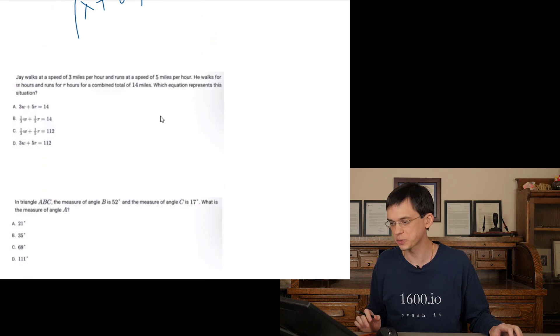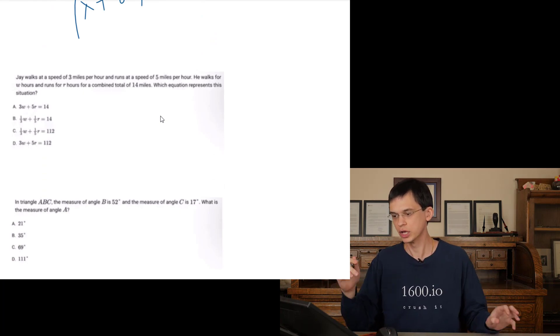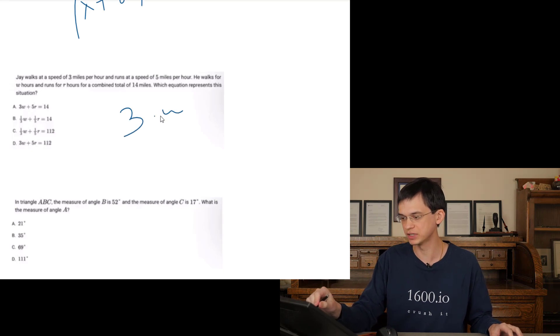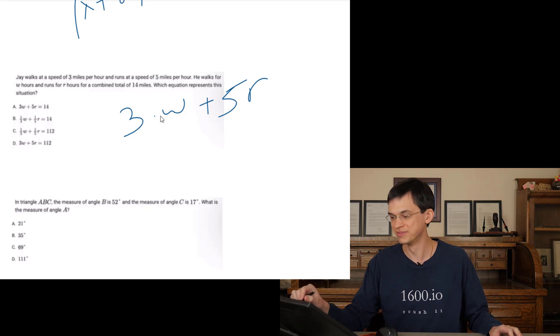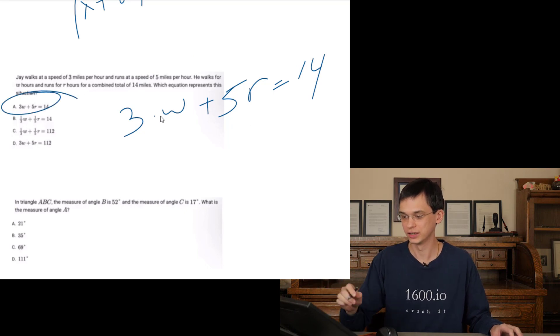Jay walks at a speed of three miles per hour runs a speed of five miles per hour. He walks for W hours runs for R hours combined total 14 miles. So if you're walking three miles per hour times W hours walking that's gonna be the total miles you walked. Then there's gonna be five miles per hour running times our hours ran equals 14 miles. So this is gonna be our equation. A.